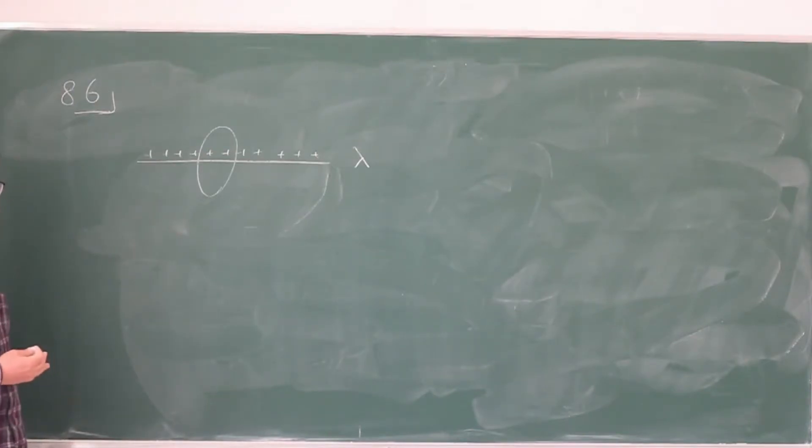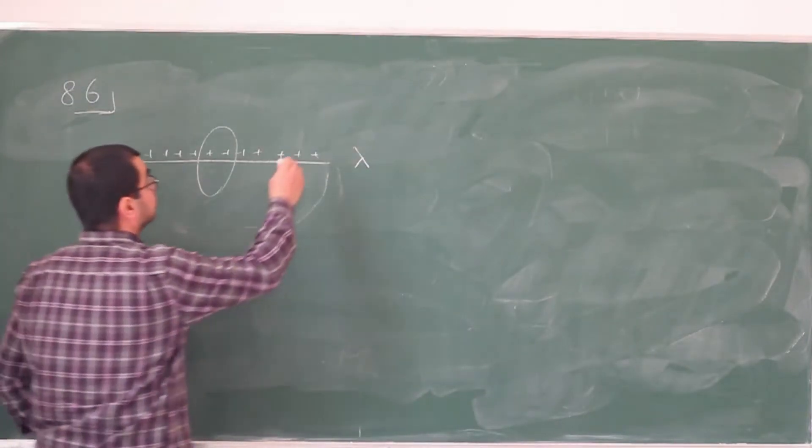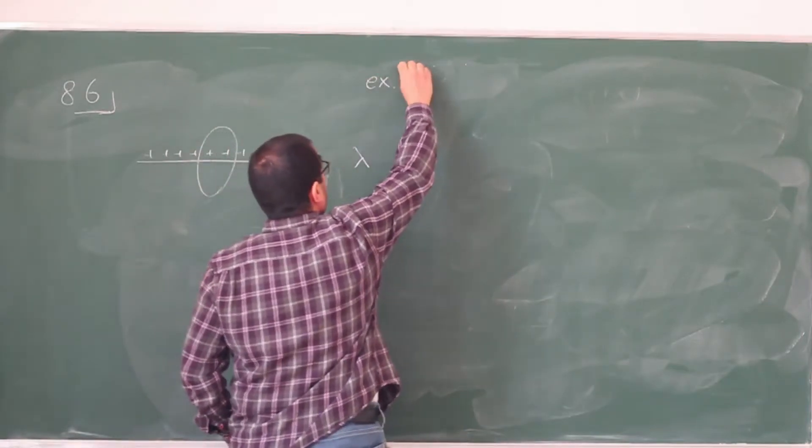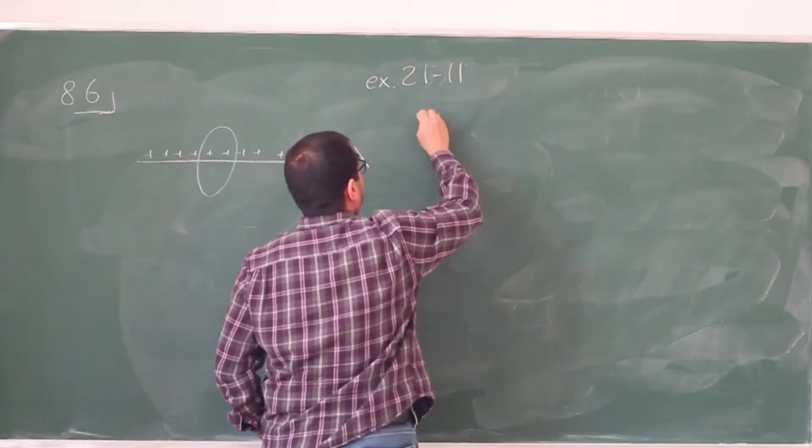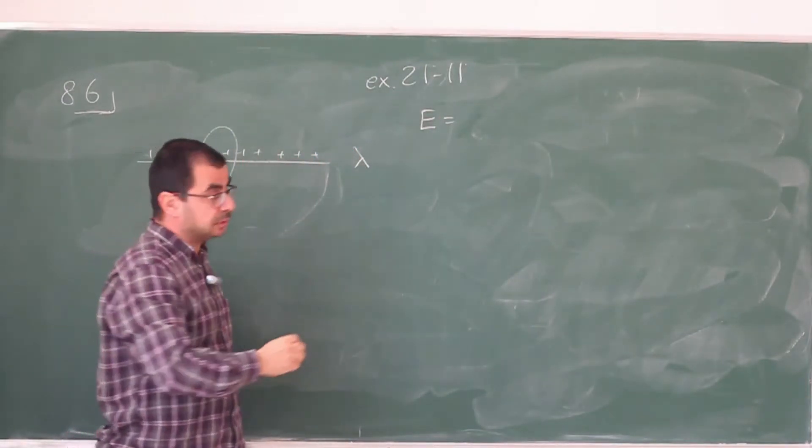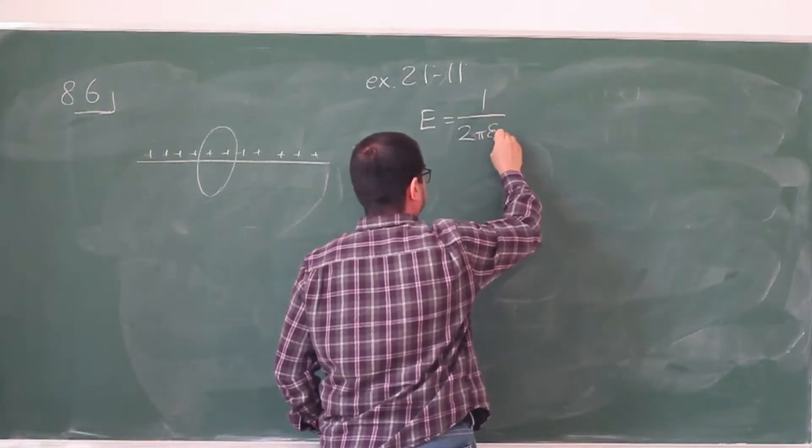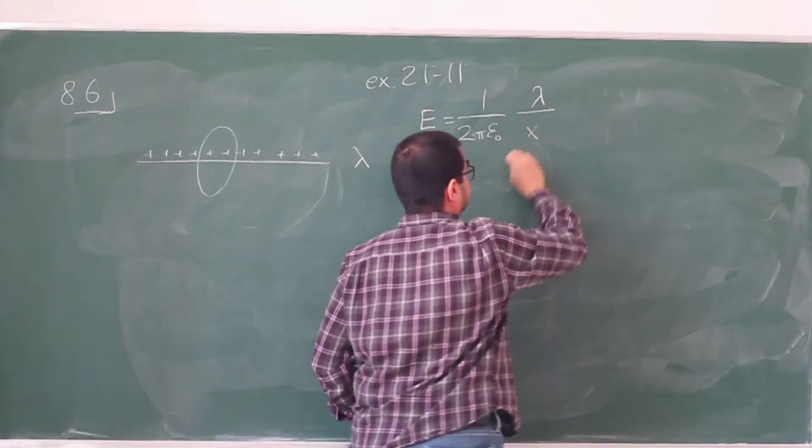Now, the electric field for this line of charge has already been calculated in one of the examples, I believe in example 2111, so that gives you the magnitude of the electric field is 1 over 2 pi epsilon naught, lambda over x.